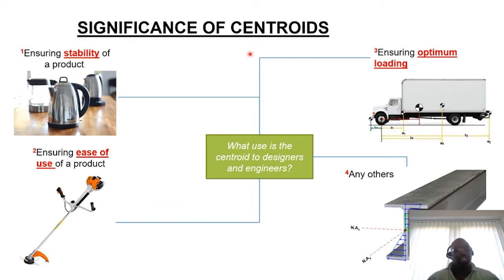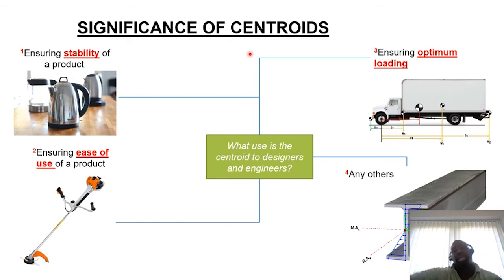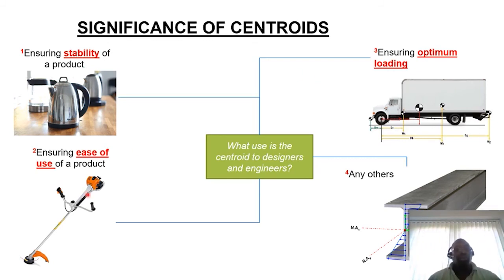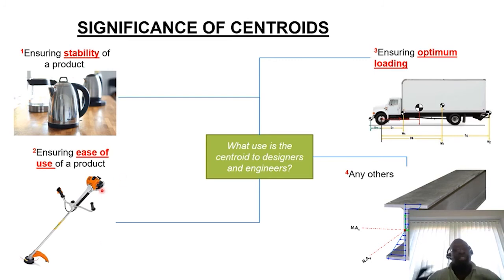What is the significance of centroids from a design perspective? We've talked about ensuring products are stable when affected by external loads, and you can use these concepts to define the tipping angle and ensure the point of rotation always leads the position of the centroid. We can also use the centroid to assess the usability of a product — for example, this grass trimmer, where the location of the motor relative to the cutter is important to ensure it's easy to manipulate during use. Understanding centroids helps with the human factors elements of product use.